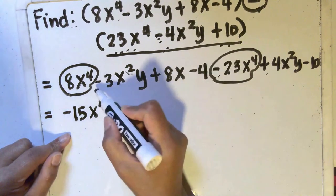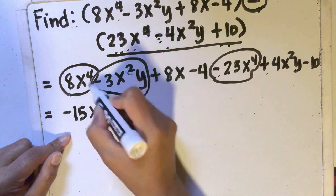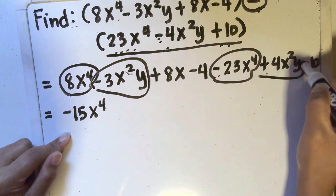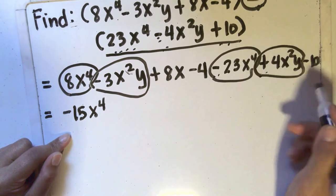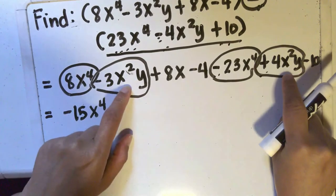And then negative 3x squared y and positive 4x squared y are like terms because they both have x squared y.